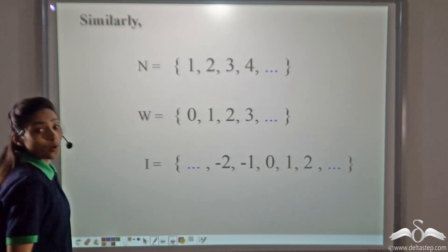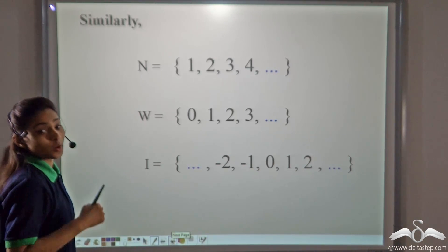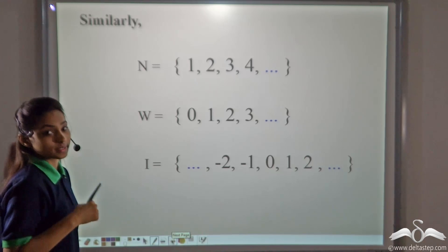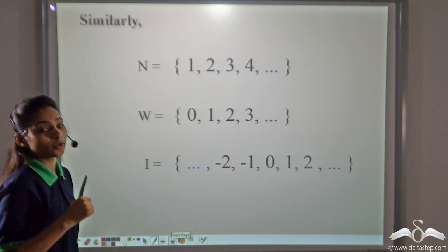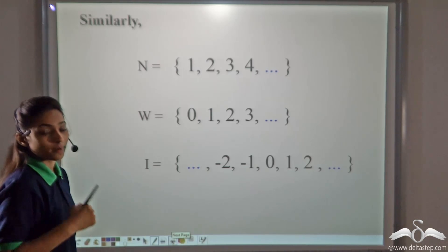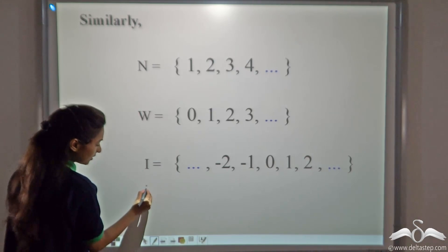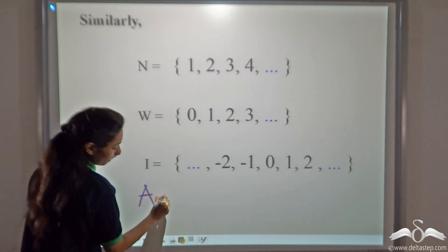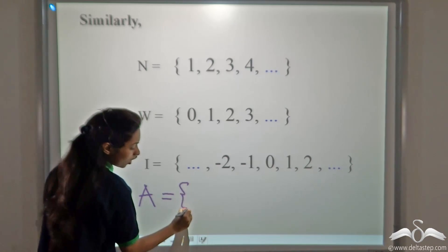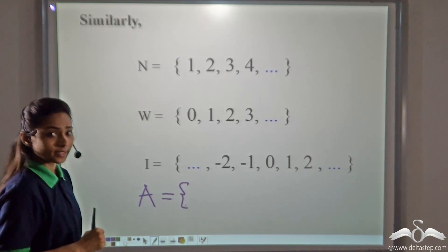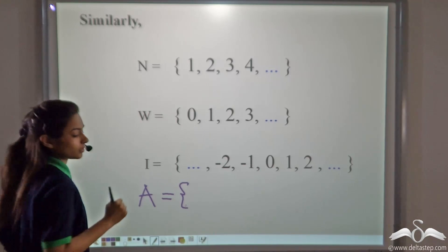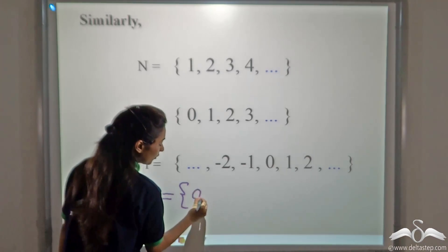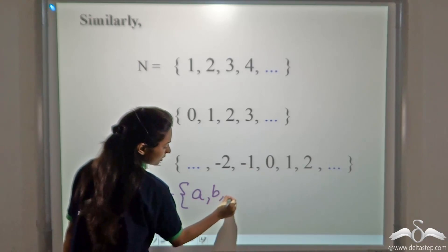Now, we can also use ellipses where we want to avoid long listing. Say, where you know the letters but you don't want to write all the letters. For example, the set of all alphabets of English. Let's take the letter A is equal to. Now, you already know that the set contains 26 alphabets but you don't want to write all the alphabets. What can you do? Write A, B, C.